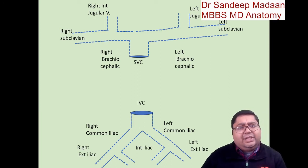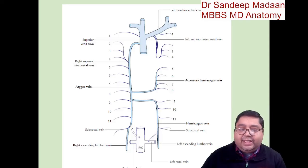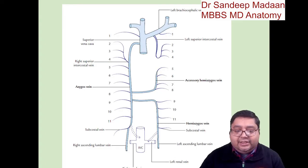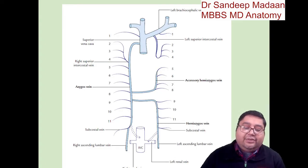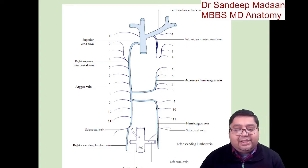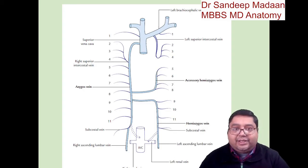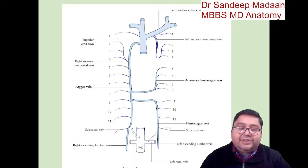The azygous system is present in between these veins. The azygous vein is on the right side only. On the left side we do not have an azygous; instead we have the accessory hemi-azygous and the hemi-azygous vein. Now, how do we remember the drainage? Look at the numbers visible here — can you tell me what these veins are?